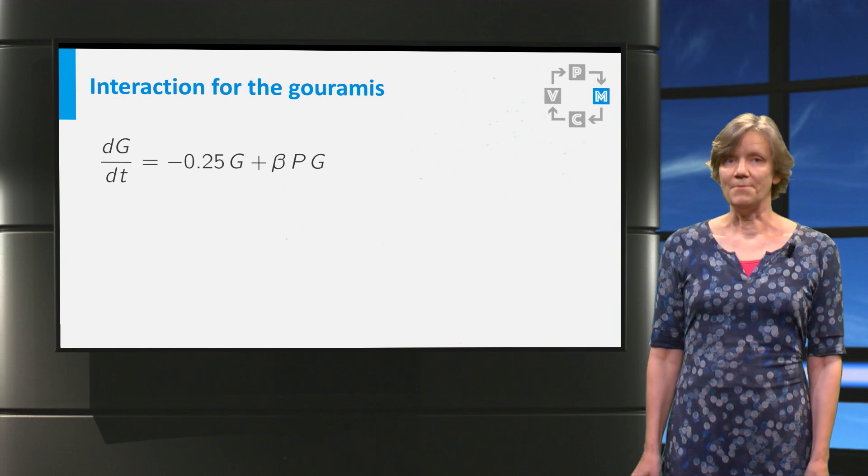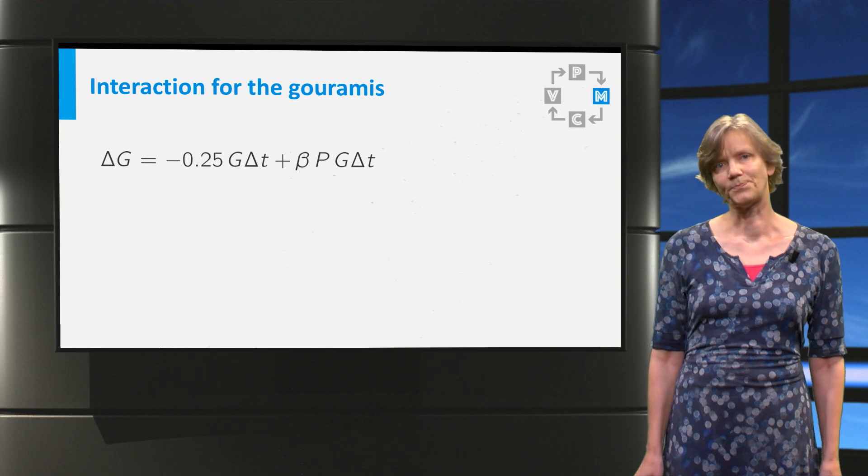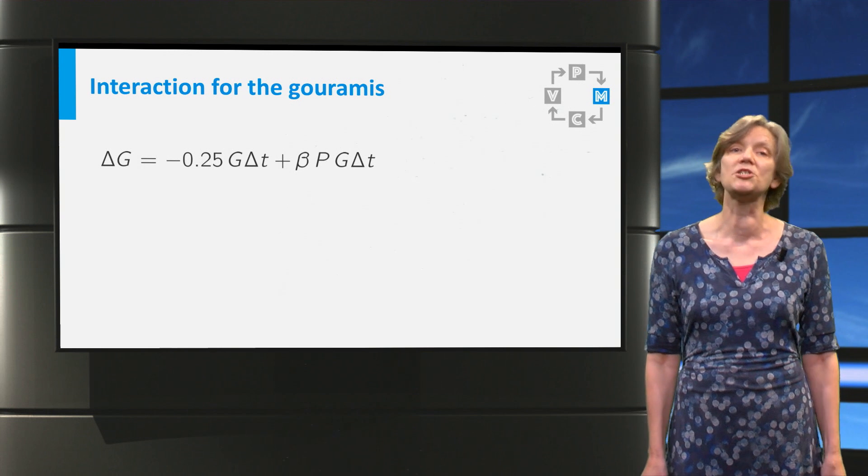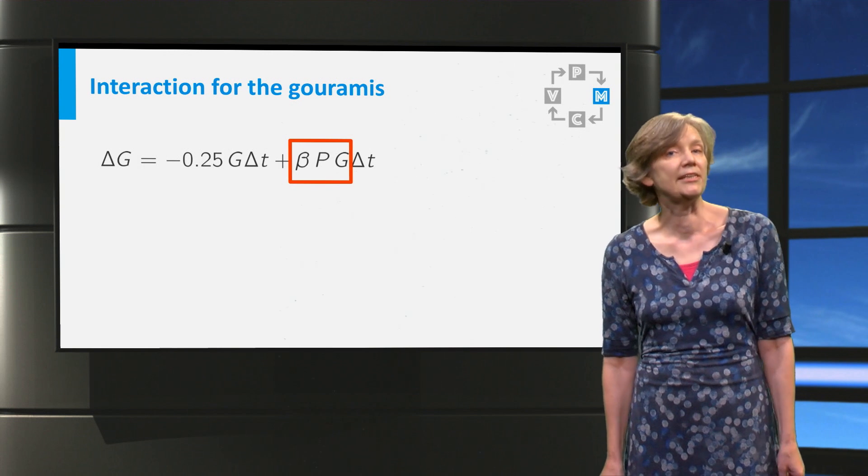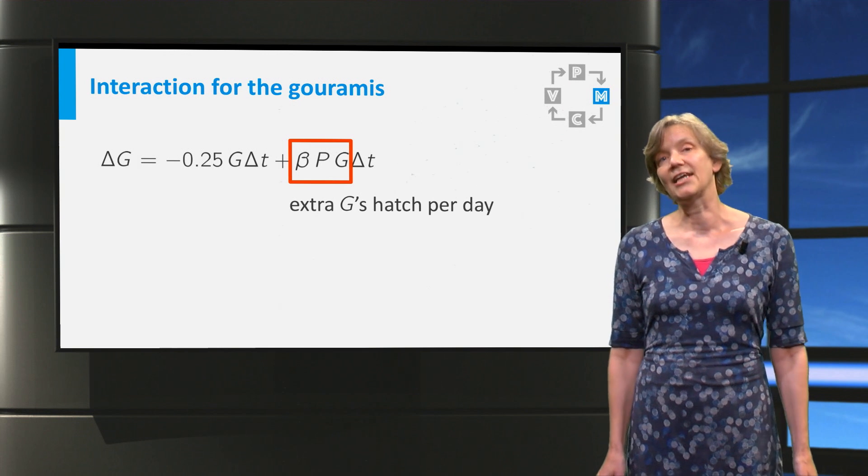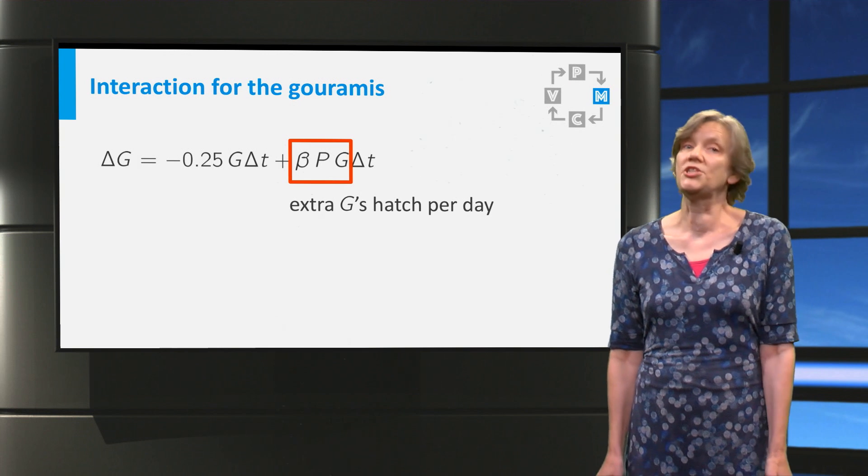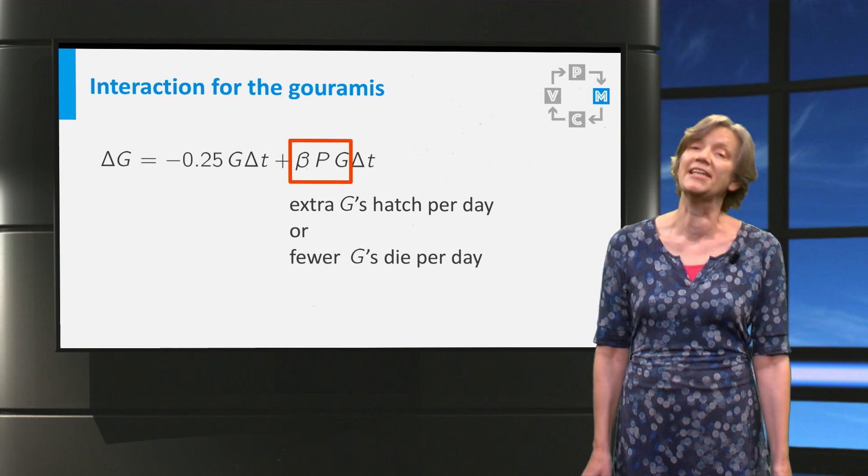Now the equation for the gouramis. Here also we go back to the difference equation. The interaction term now describes the extra growth in the number of gouramis now that they have extra food. This growth could be caused by additional eggs being hatched. Or you could say that because the gouramis have eaten the rainbow fish, they die later.